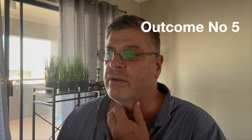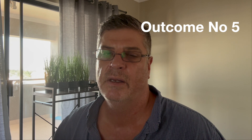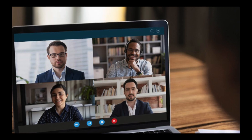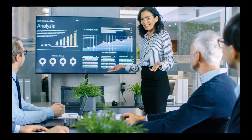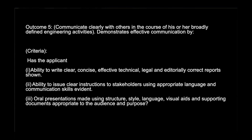Number five: communication — communicate clearly with others in the course of your broadly defined engineering activities. Remember, outcome number five will also be evaluated during your interview, where the interviewer will look at how you do your presentation and how you communicate — is it effective and done appropriately, and are the media and tools used to get the message across? There are also criteria here: number one, the ability to write clear, concise, effective, technically and editorially correct reports. Number two, the ability to issue clear instructions to stakeholders using appropriate language.